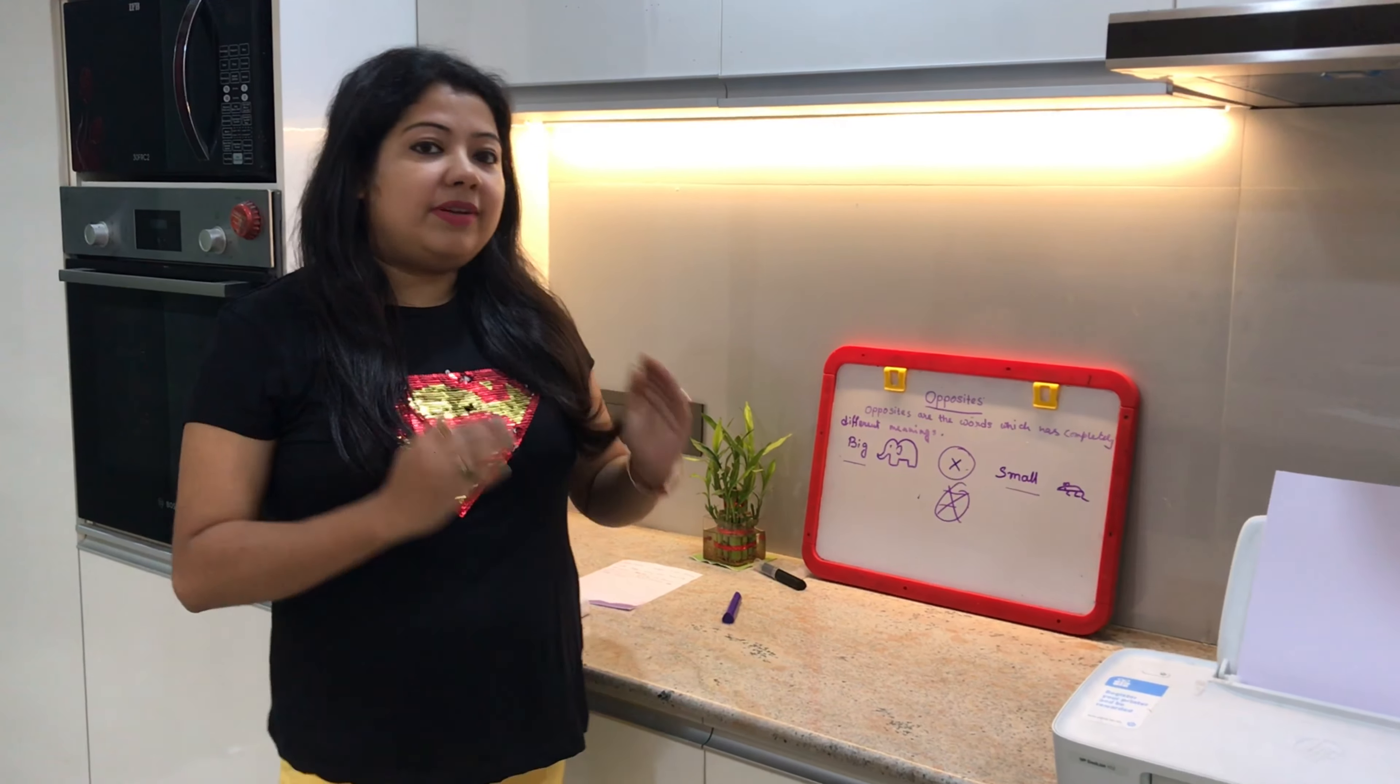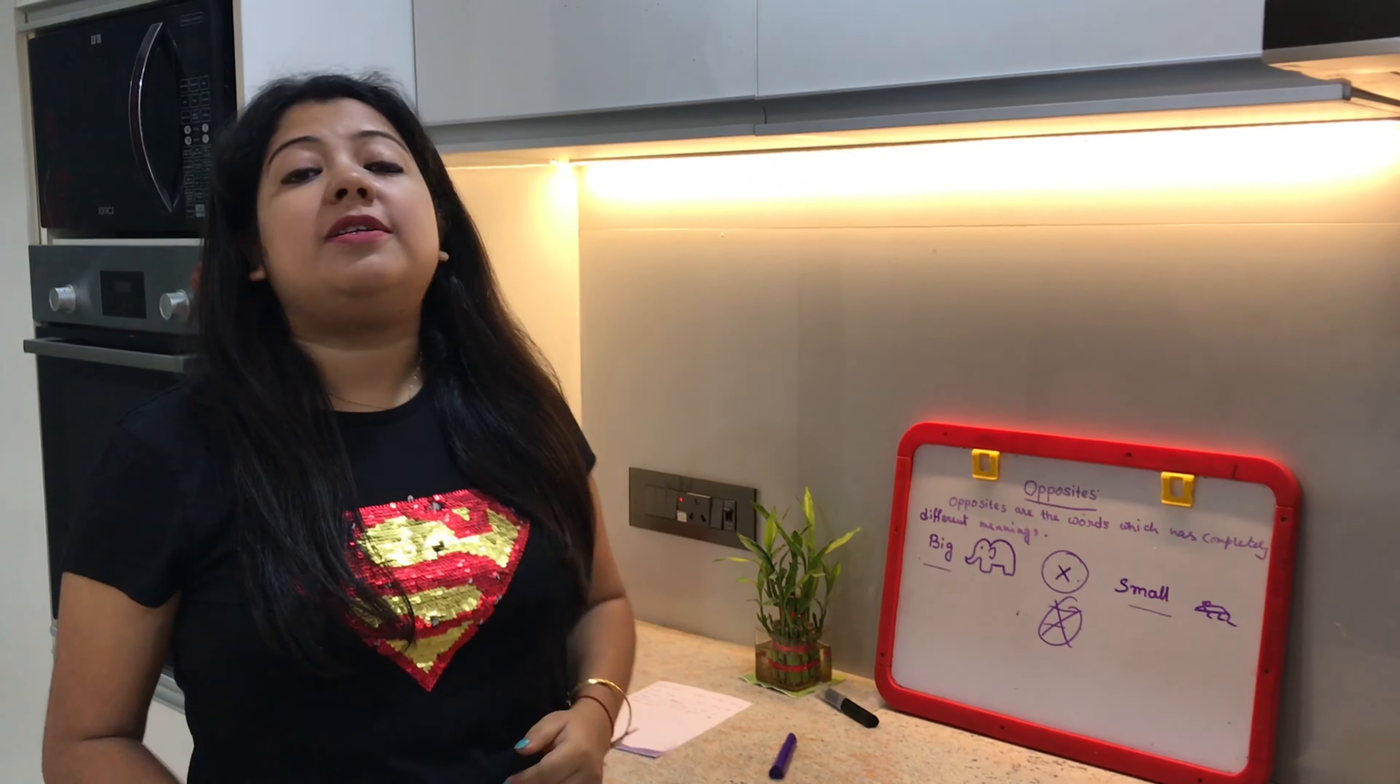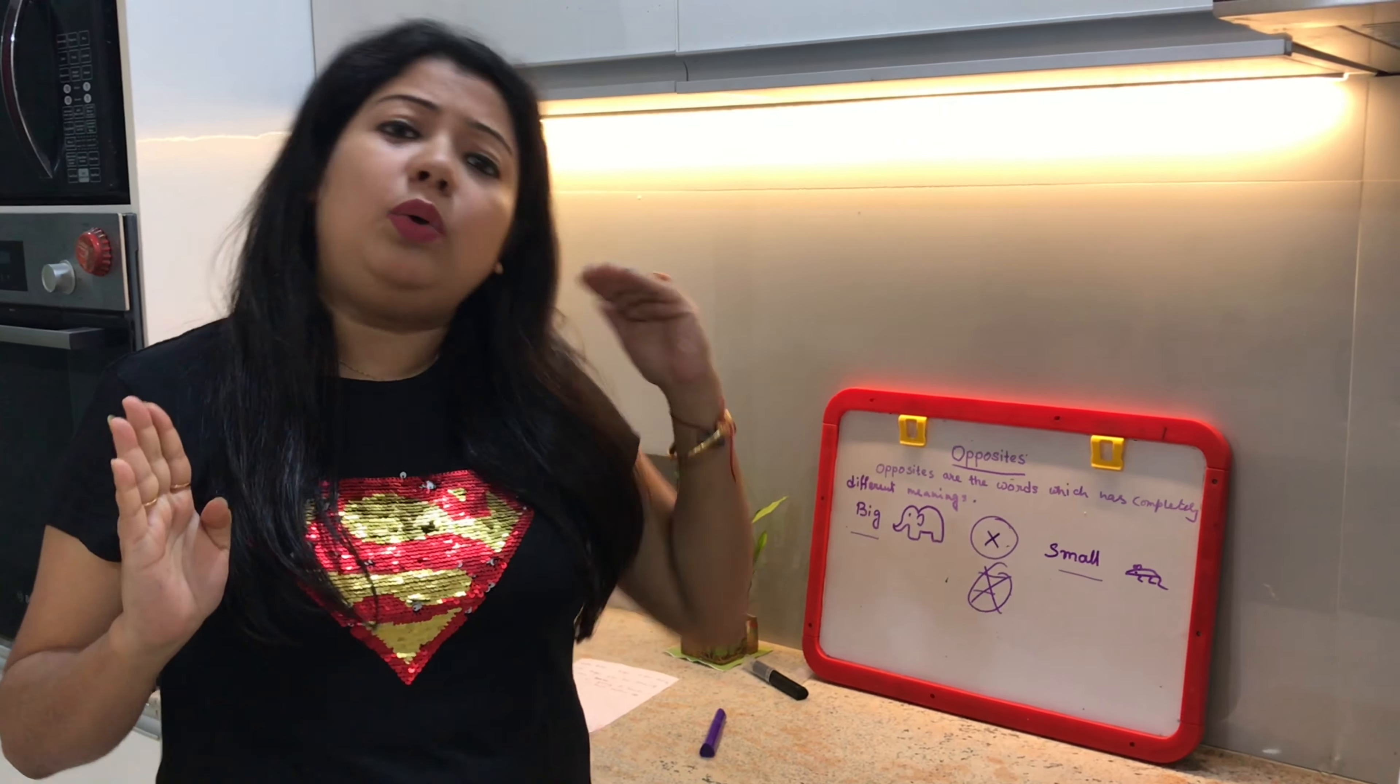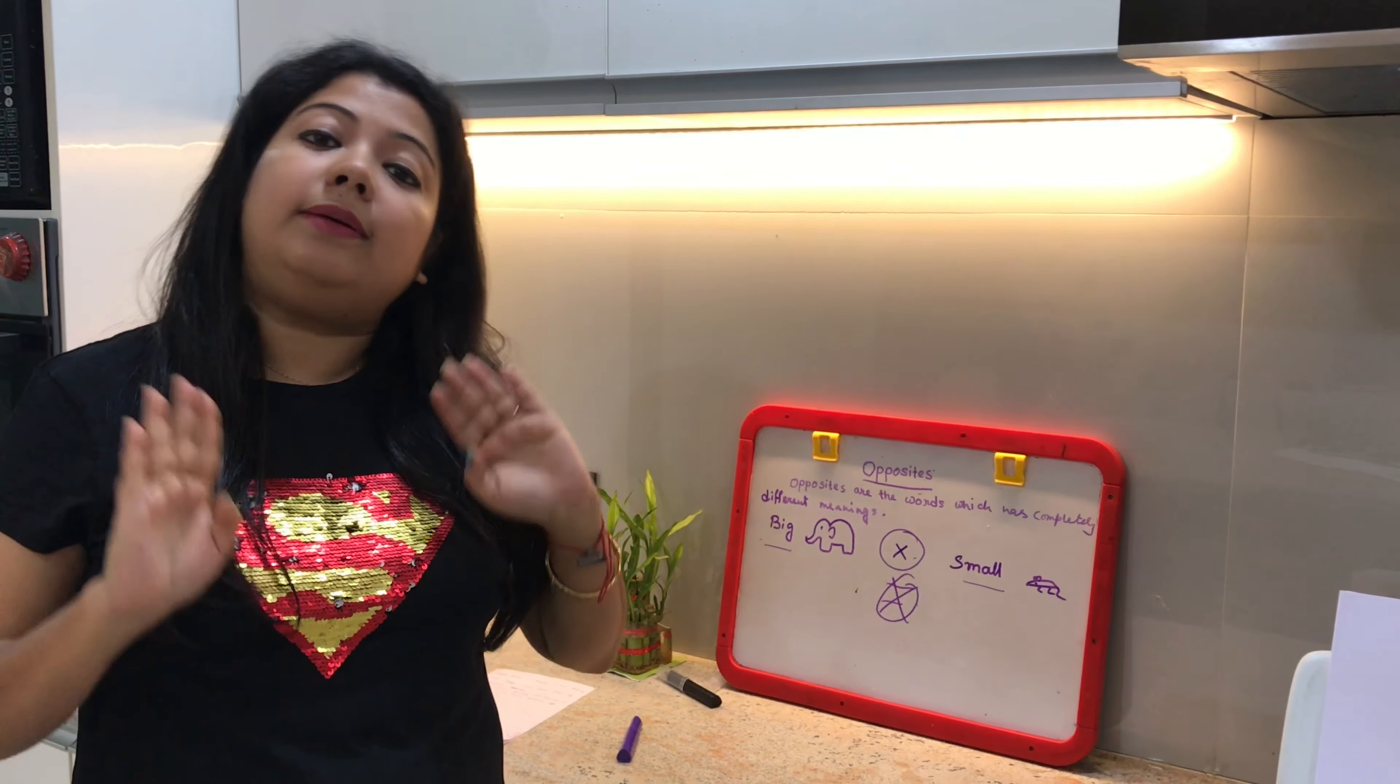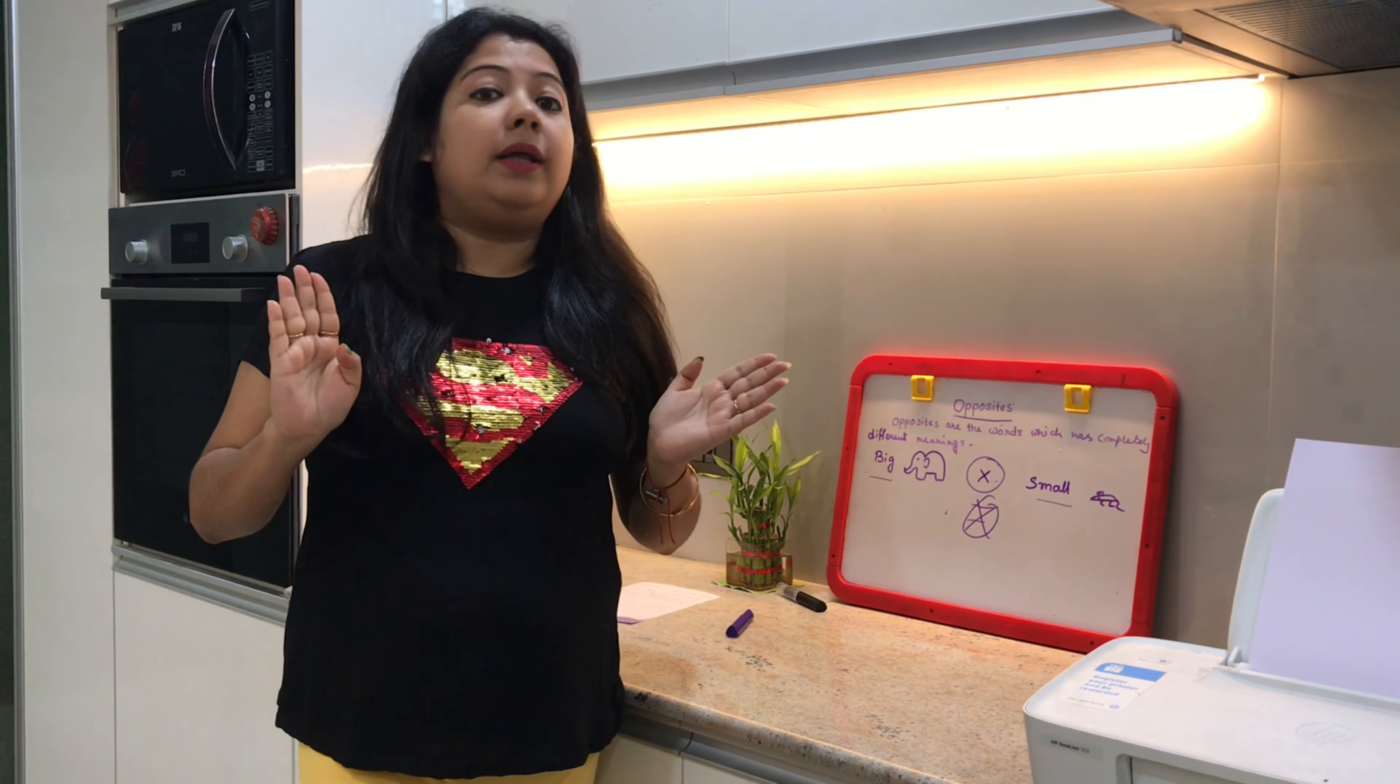Opposites - what do you mean? This symbol means they are not the same, very different meaning. Similar meaning - there is nothing. Same meaning - there is nothing like that. Completely different. These are two words which mean completely different things.